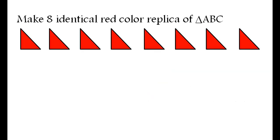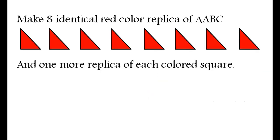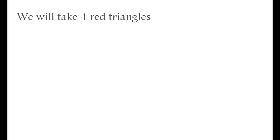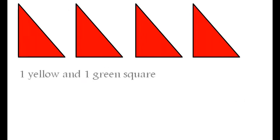To prove this theorem, make 8 identical replicas of triangle ABC on red color paper and one more replica of each colored square. Out of these replicas, we will take 4 red triangles, 1 yellow square and 1 green square.